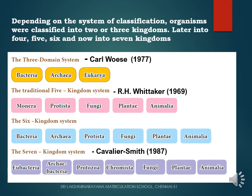In this slide, I am showing different types of classification proposed by different scientists. Depending on the system of classification, organisms were classified into two or three kingdoms, later into four, five, six, and now into seven kingdoms. For example, R. H. Whittaker proposed the five kingdom classification. Three domain classification was proposed by Carl Woese. In 1987, Cavalier-Smith revised the six kingdom system to a seven kingdom system.